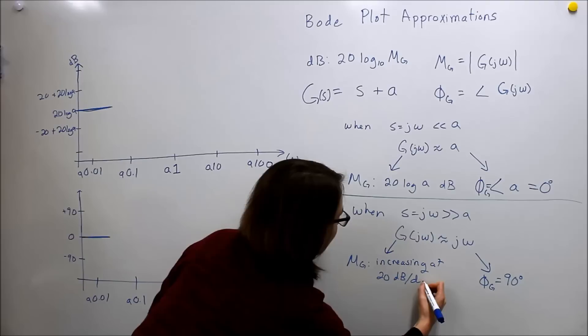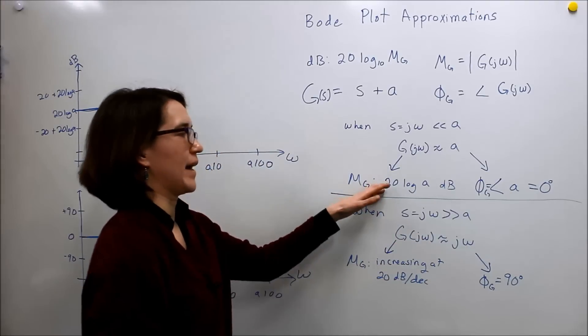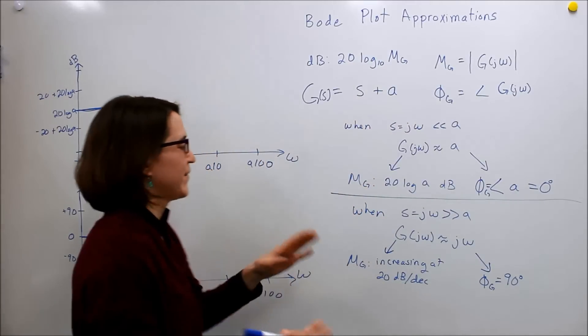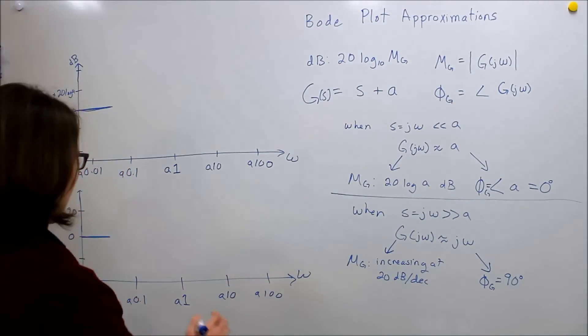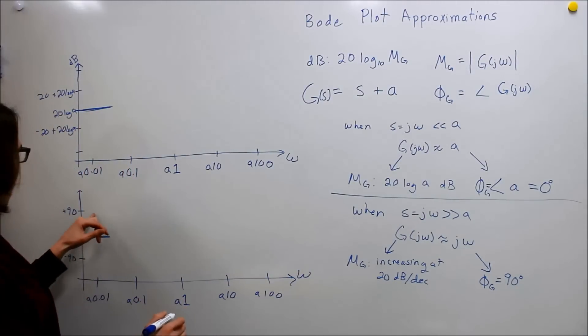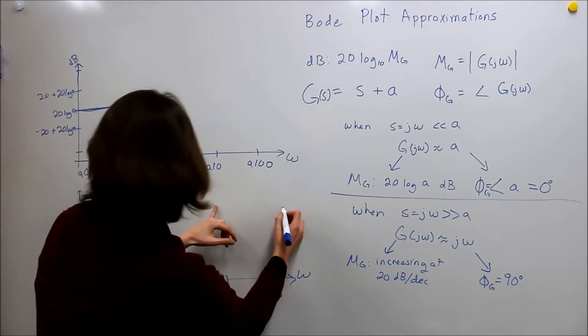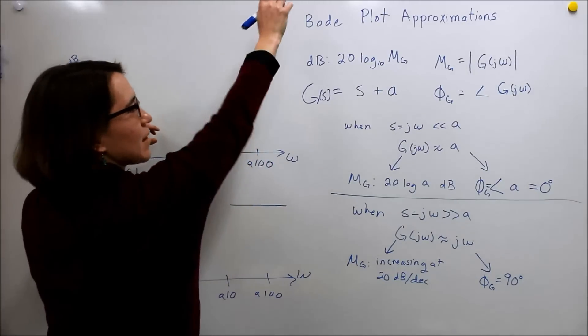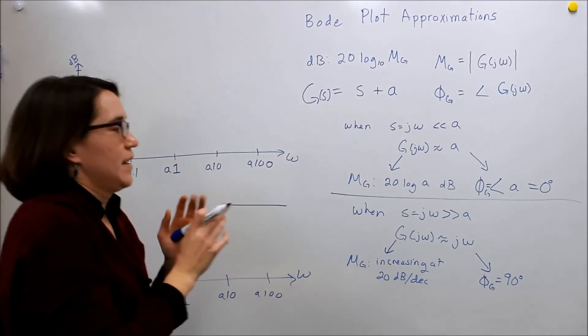So we'll know that the magnitude will be increasing at 20 dB per decade, which is what you would get if you take that and you plug it back into our magnitude equation. So we know that we're going to go towards 90, positive 90 degrees here as we go to infinity, and we're going to be increasing at some rate.